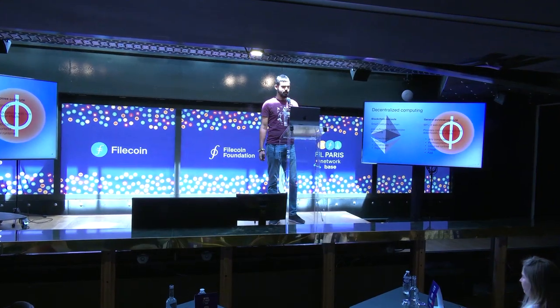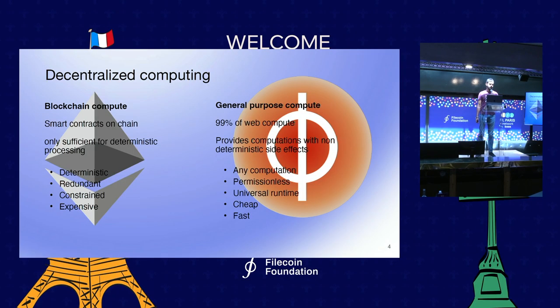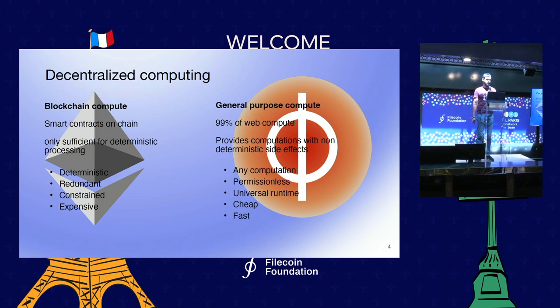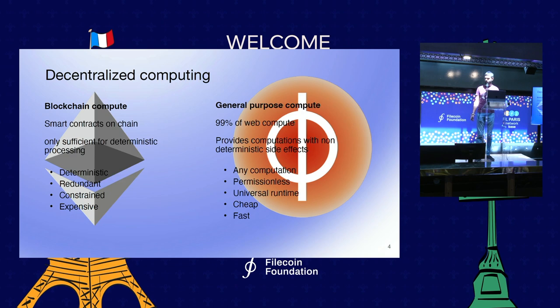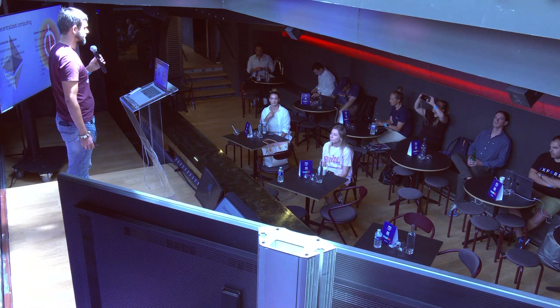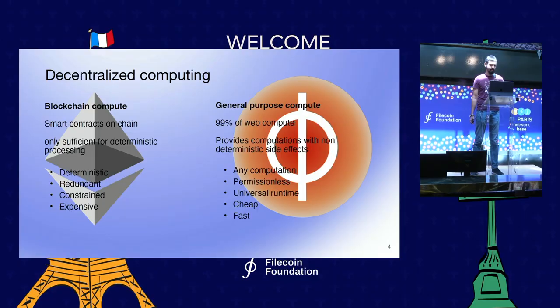Speaking about consensus, there are two very different kinds of decentralized compute. On one hand, we have blockchain compute — smart contracts on chain. Fundamentally, it's sufficient for deterministic processing, but it's redundant and expensive, because we repeat the same computation and data many times. So there are some limitations, which also open possibilities, but they are constraints.